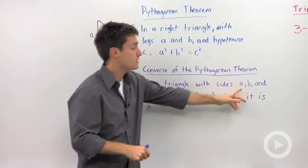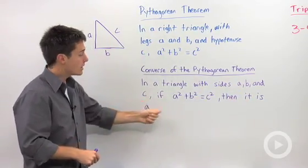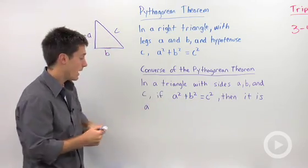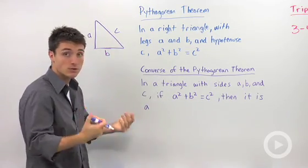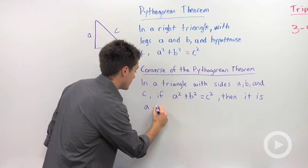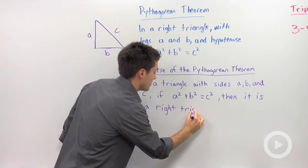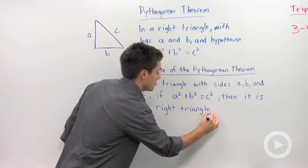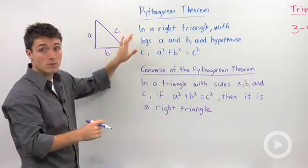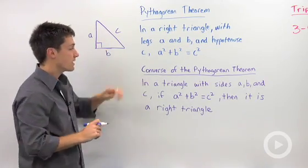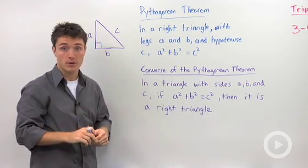That's what the converse is saying: if you have a triangle with sides A, B, and C, and if A squared plus B squared equals C squared, then it is a right triangle. So if A squared plus B squared equals C squared in any triangle, you have a right triangle. That's the converse of the Pythagorean Theorem.